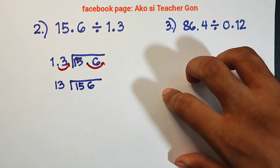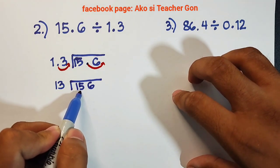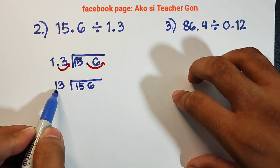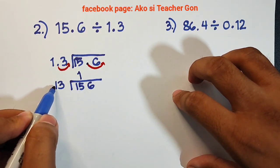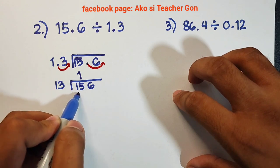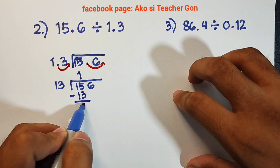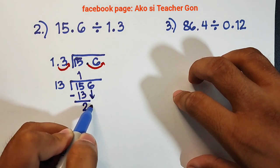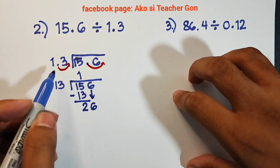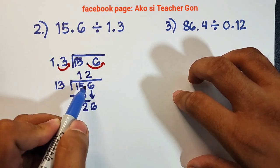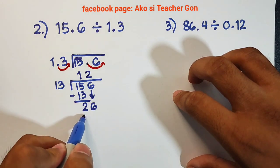What's next is we will proceed with the long division. 15 divided by 13 is equal to 1. And 1 times 13, that is equal to 13. Subtract these numbers, we have the answer of 2. And then bring down 6. So we have now 26 divided by 13, that is equal to 2. And 2 times 13, that is equivalent to 26.